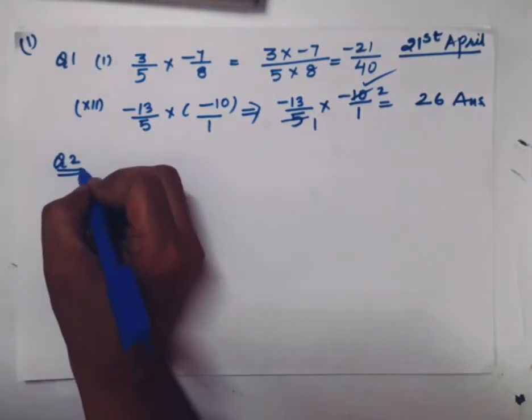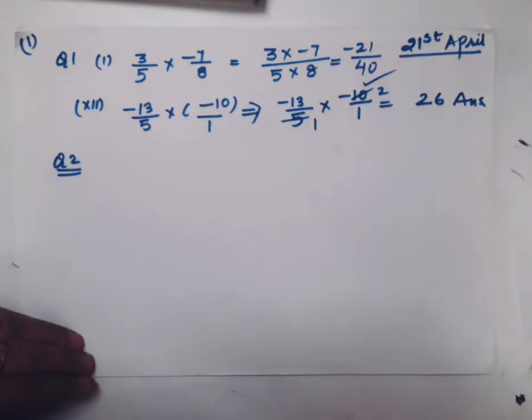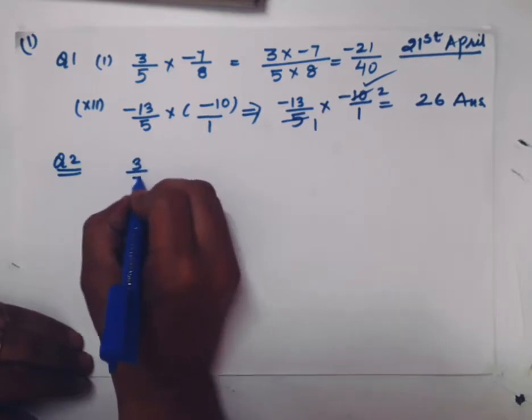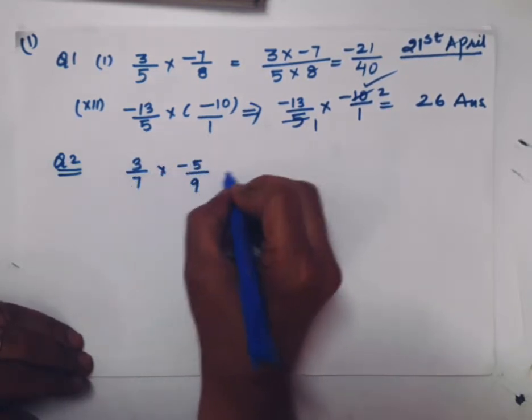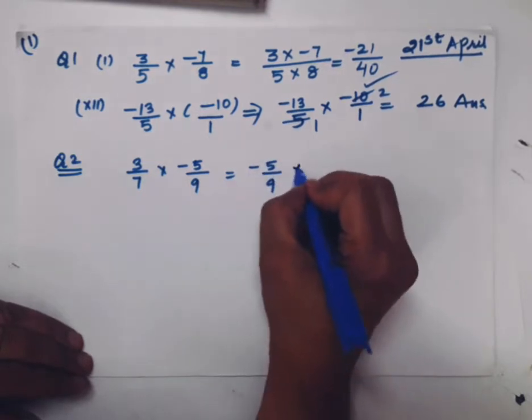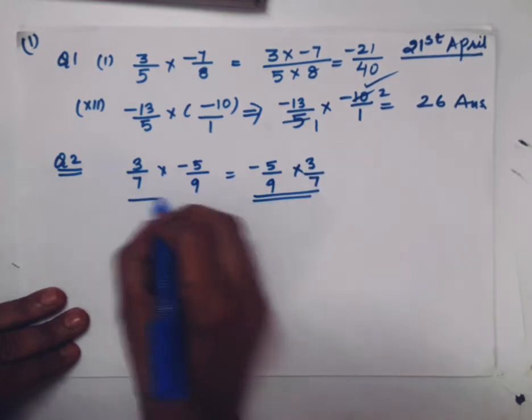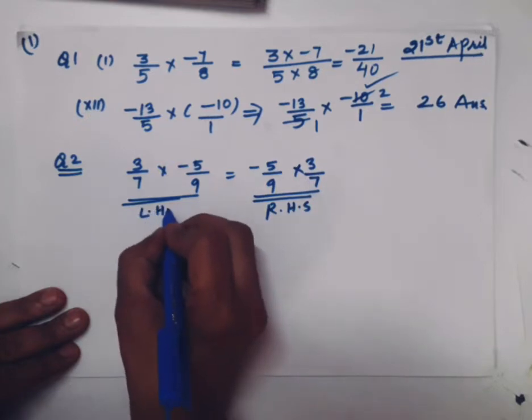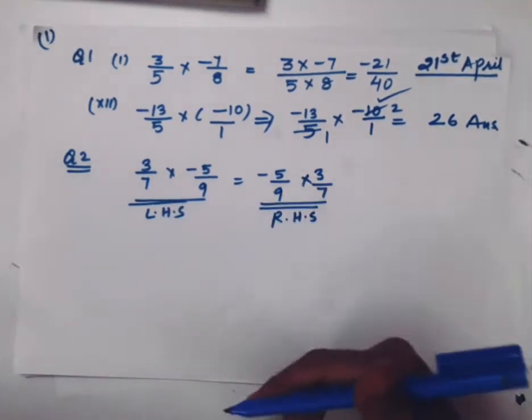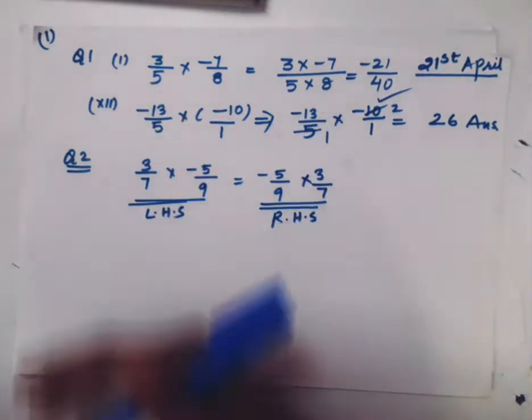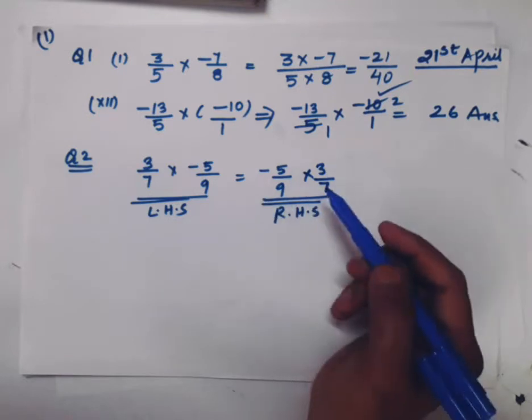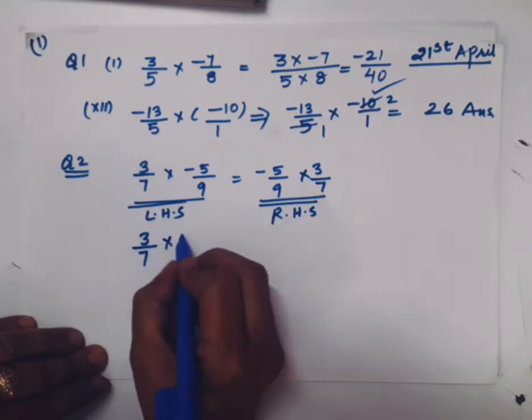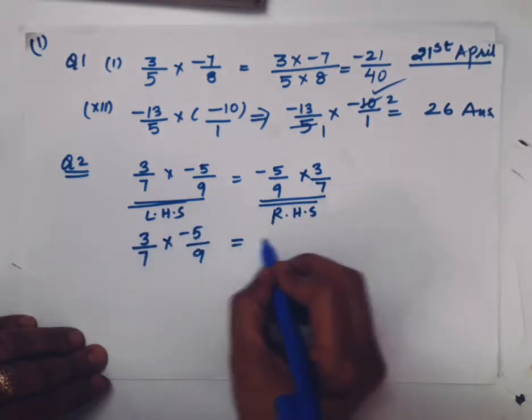Question number 2. Here the question is verify each of the following. Again, I am telling you verify means left hand side and right hand side must be equal. Question is 3/7 × -5/9 = -5/9 × 3/7. We have to verify.